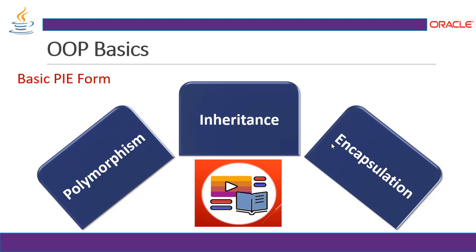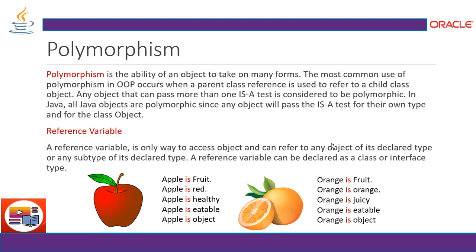Polymorphism is the ability of an object to take on many forms. The most common use occurs when a parent class reference is used to refer to a child class object. Any object that can pass more than one 'is-a' test is considered polymorphic. For example, an apple is a fruit, is red, is healthy, is eatable, and is an object — this 'is-a' relationship from apple to all its characteristics makes it polymorphism.